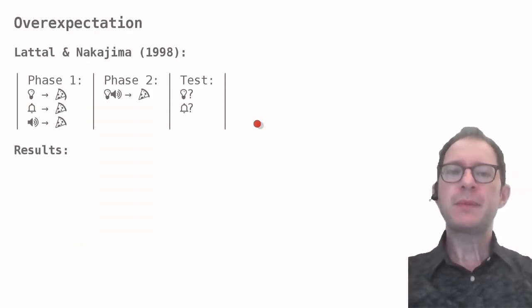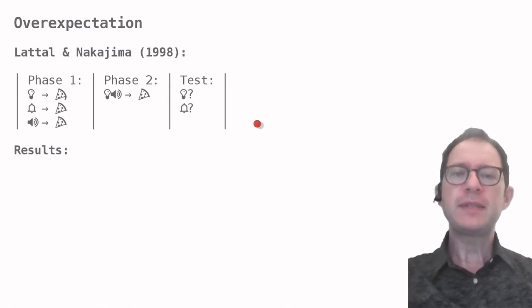The last experiment we want to discuss in this lesson shows a phenomenon called over-expectation. It shows another counter-intuitive property of reinforcement, that reinforcing stimuli can actually decrease responding to them. We look at an experiment by Lattal and Nakajima. In phase 1, rats experienced three stimuli. We have a light stimulus, a sound stimulus, indicated by the bell, and a noise stimulus, indicated by the speaker symbol.